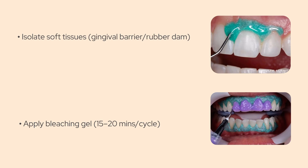After that, we isolate the soft tissues using a gingival barrier or a rubber dam to protect them from the peroxide, which can be caustic. Then, we apply the high-concentration hydrogen peroxide gel to the front surfaces of the teeth. Some systems use light or laser activation, but studies show that light activation may not be essential — it's more about the chemistry of the peroxide itself. Typically, the bleaching agent is left on the teeth for about 15 to 20 minutes and sometimes repeated in two or three cycles during the same appointment, depending on the system and the severity of the discoloration.